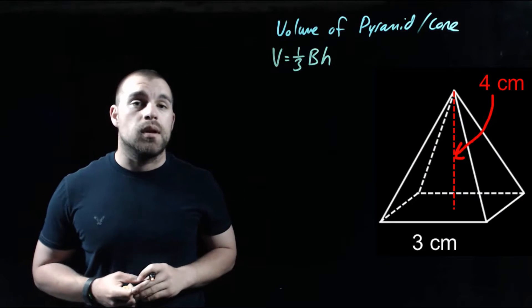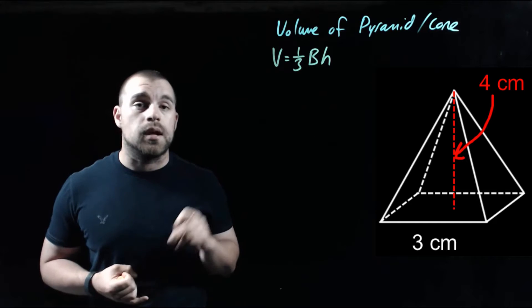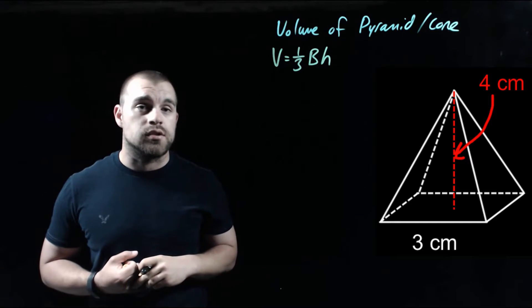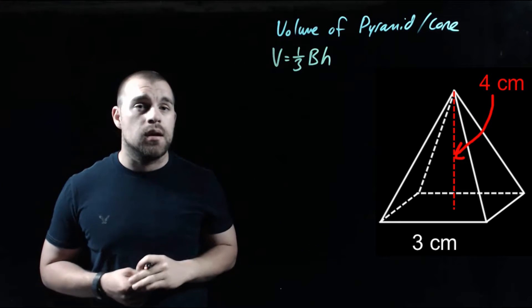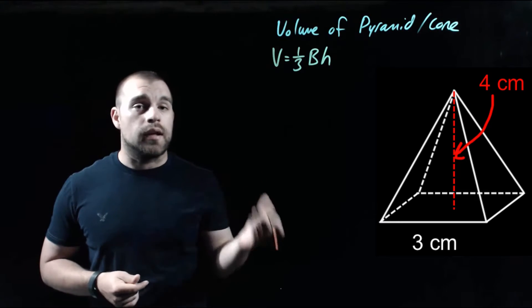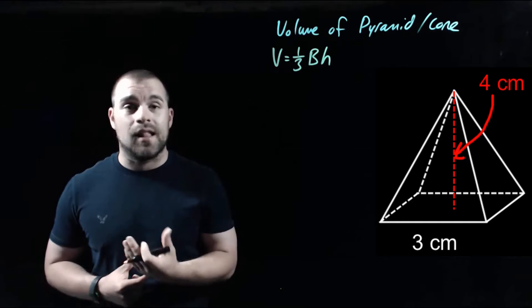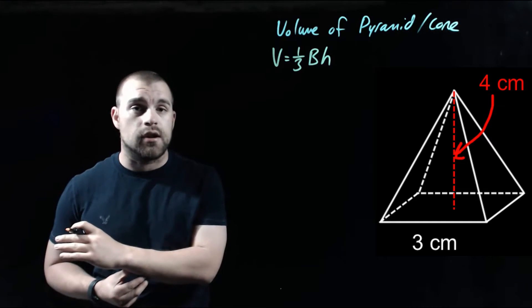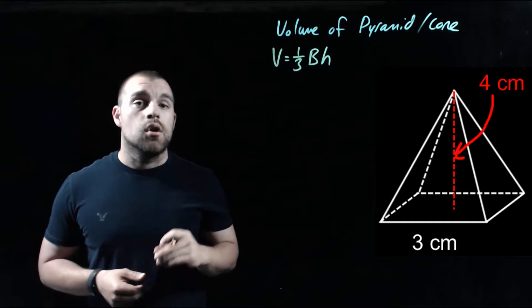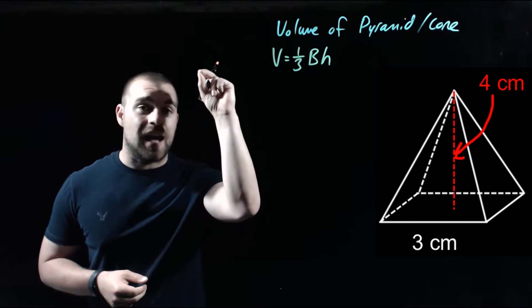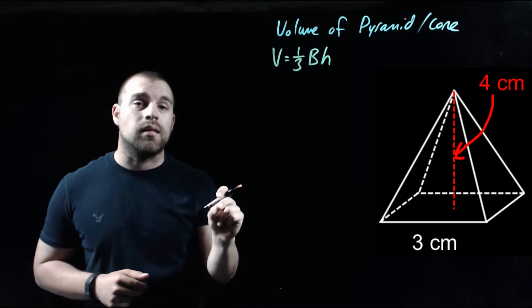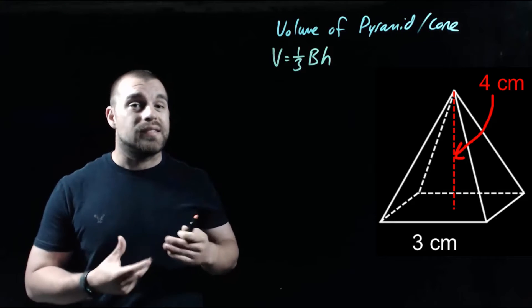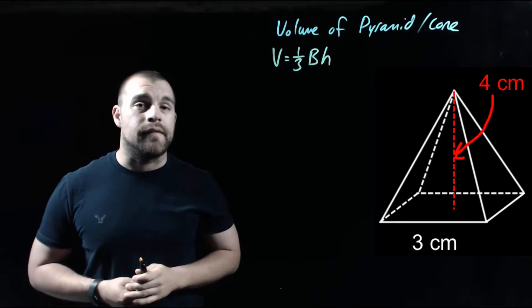In this example we've got a square pyramid with lengths of three centimeters on those base edges of our square, and we've got this height of four centimeters running down the middle of our pyramid. Now the height that we're going to use to calculate volume is a little bit different than the slant height which we use to calculate surface area. The height that we're going to be using runs from the apex, which is the top vertex of our pyramid or cone, perpendicular directly down to the base. So that's the kind of height that we're going to use in order to calculate the volume.